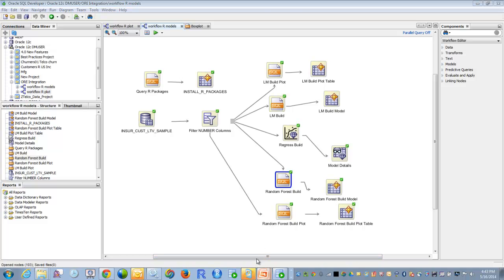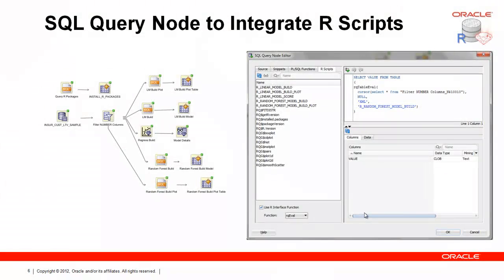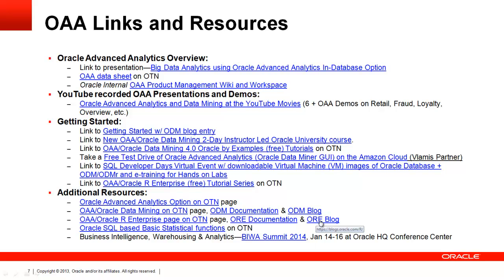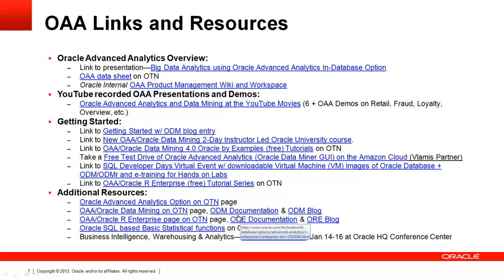That's the summary. If you want more information, there's lots of information on Oracle R Enterprise and its documentation, plus a fantastic blog. The particular white paper I mentioned is on the Oracle Data Mining website — just go to the main Oracle Data Mining page to find and download it. As always, if you send me an email at charlie.berger@oracle.com, I'd be happy to send you these links. Thank you very much for watching this Oracle Advanced Analytics YouTube video on the integration of SQL Developer, Oracle Data Miner, and R.